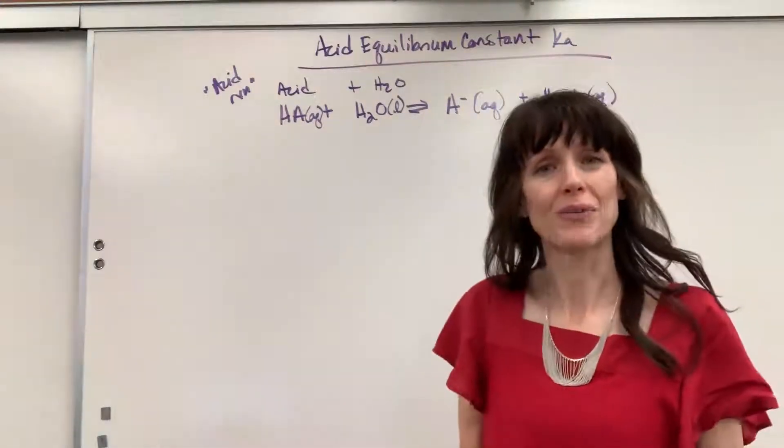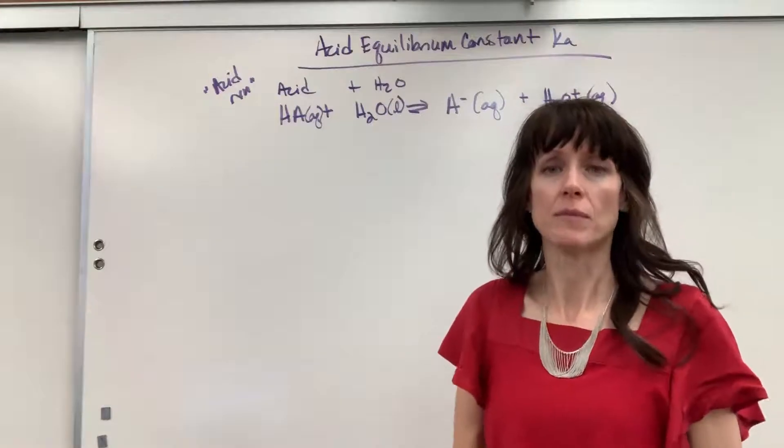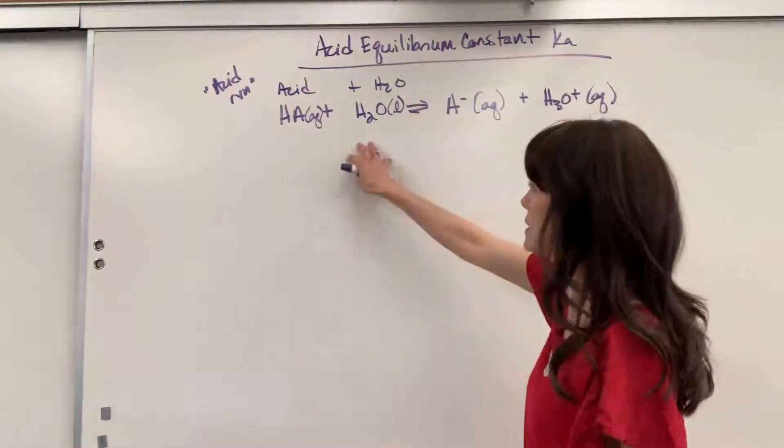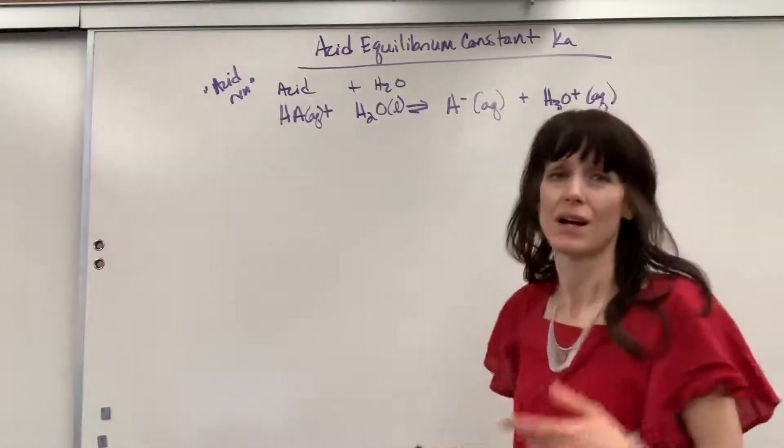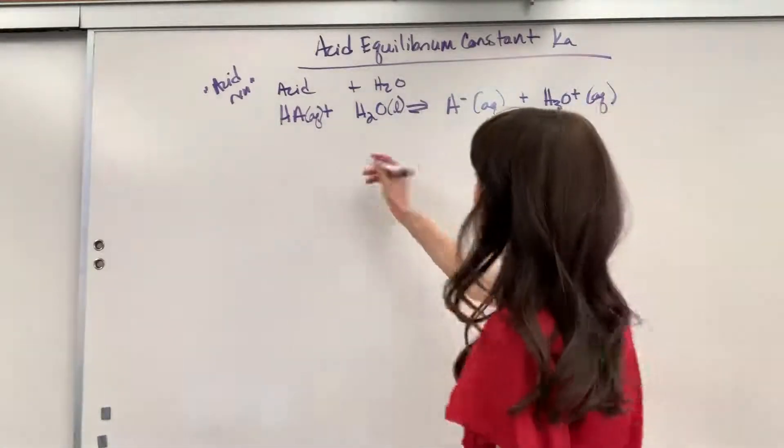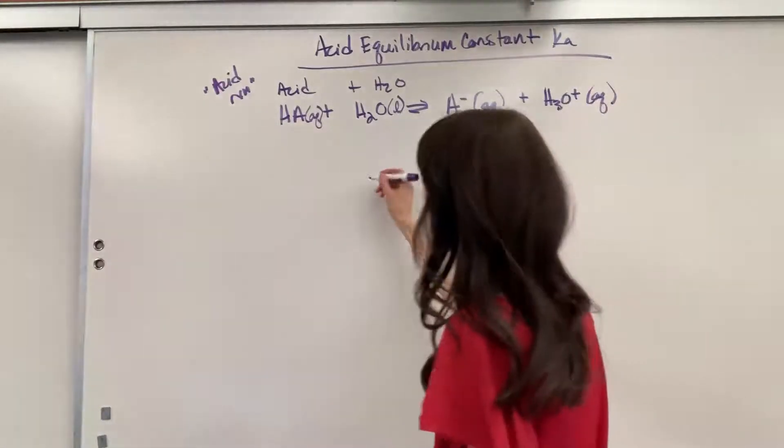So let's go ahead and write the equilibrium expression. Remember, you'll recall products over reactants and the coefficients are going to be the exponents. Now, because I have an acid next to water, instead of just writing K,